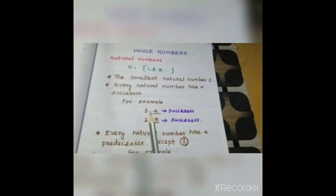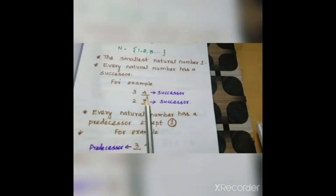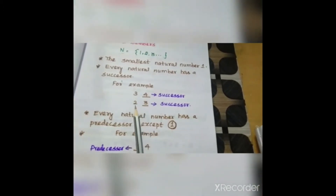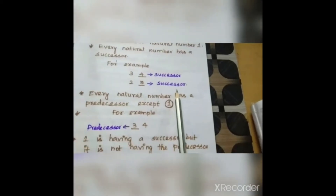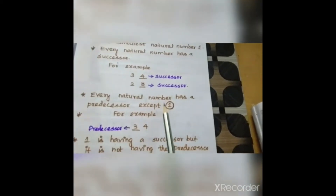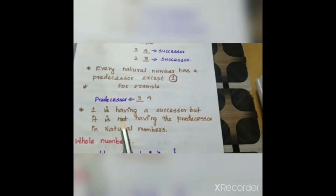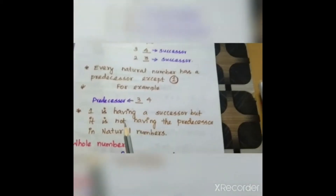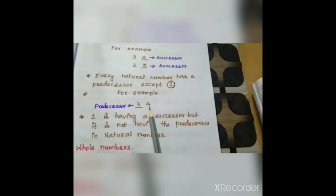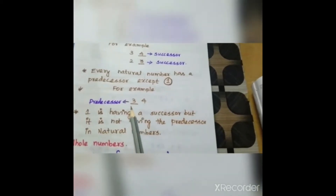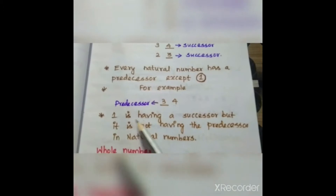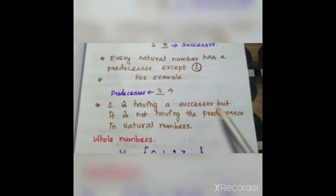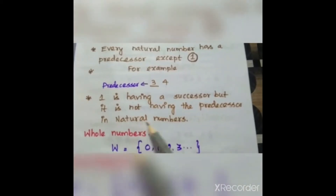Every natural number has a successor. For example, 3 has a successor 4, and 2 has a successor 3. Natural numbers except 1 also have a predecessor — for example, 4 has the predecessor 3. But 1 has a successor and does not have a predecessor in natural numbers.